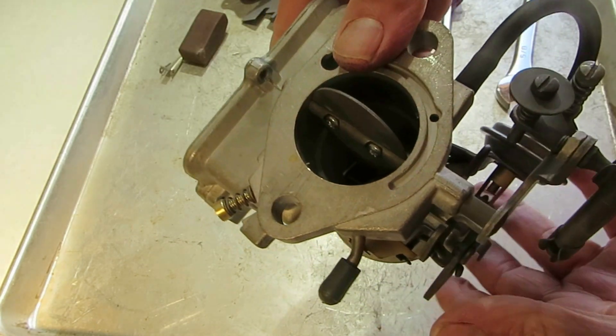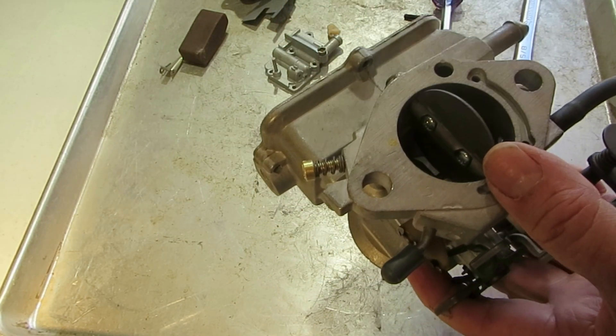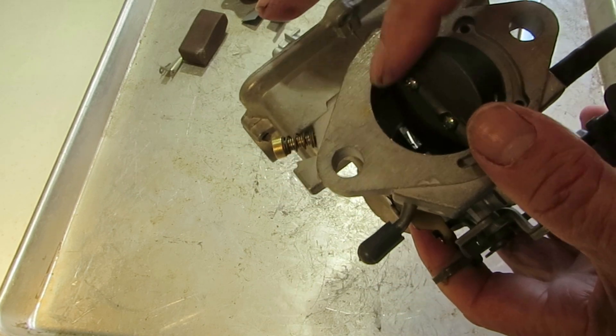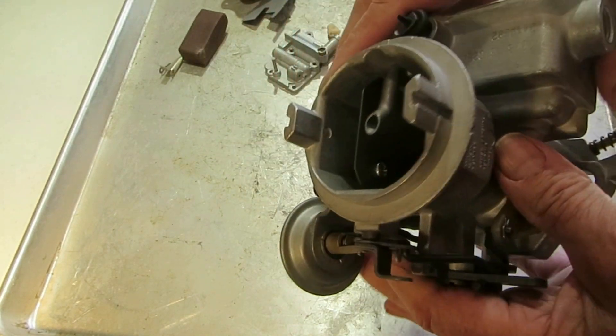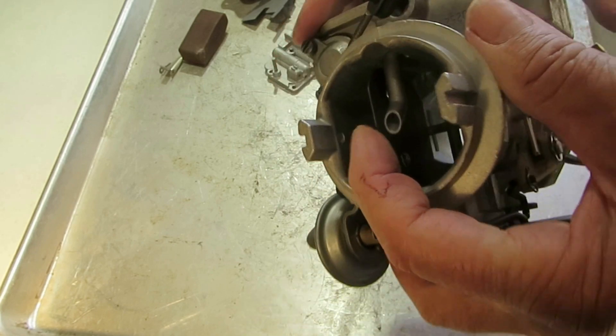And so if you have a little bit of a hesitation you think it's in between the idle and the accelerator pump, it's going to be kind of hard to tell. Check and make sure that that slot is plenty open, blow air through it, make sure the idle vent through the top is open.